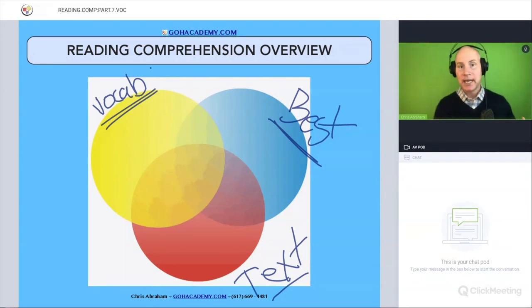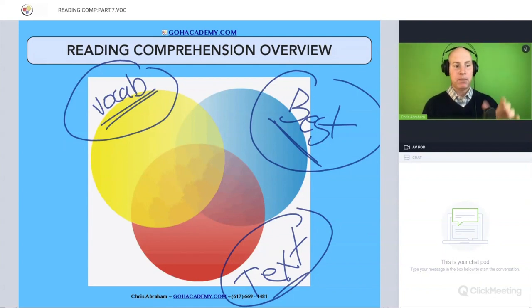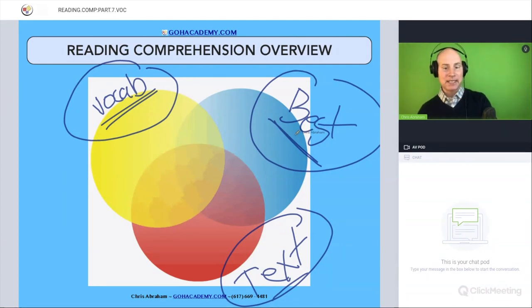But I want you to understand that each question that we do could be a vocabulary question involving a best practice for an informational text. So you're going to find that these questions overlap, and that I could be putting a vocabulary question that could easily have gone into an informational text section of the class, or a best practice question that's a best practice vocabulary question.